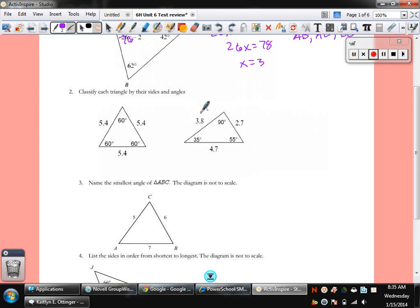Number 2. Classify each triangle by their sides and their angles. So, this is an equilateral equiangular. Equilateral is equal sides. Equiangular equal angles. This triangle right here, none of the sides are congruent. So, that's a scalene. And there's a 90 right there, so it's right. So, this is a right scalene. Got to know our vocab.